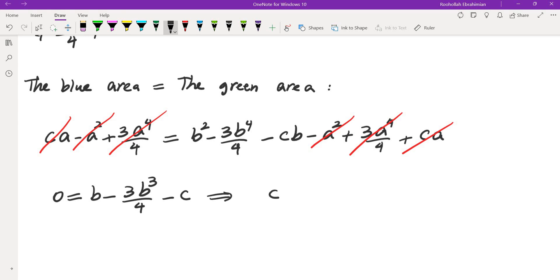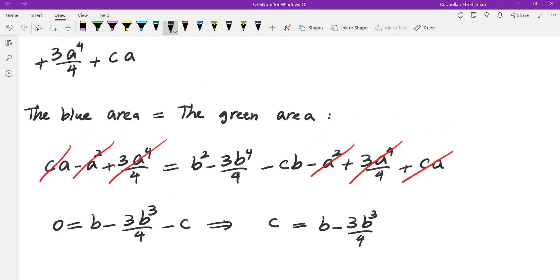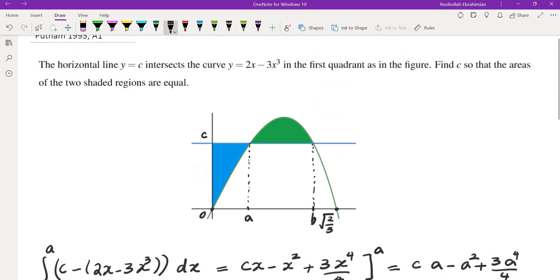Which means c is equal to b minus 3b cubed over 4. Now what else do we know about b and c?